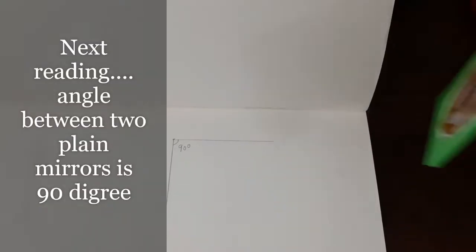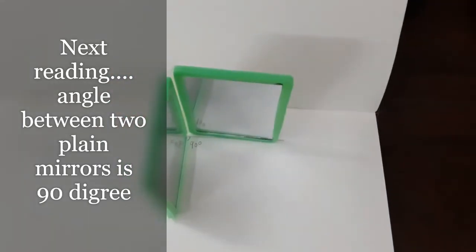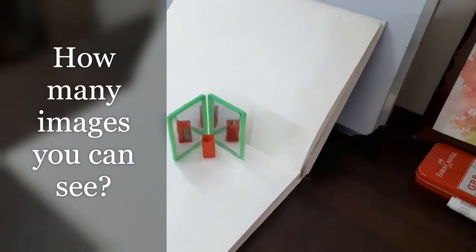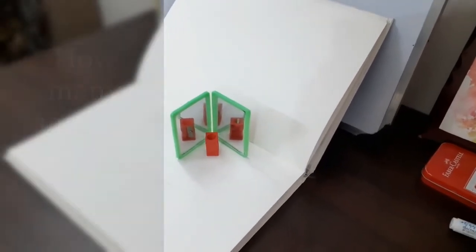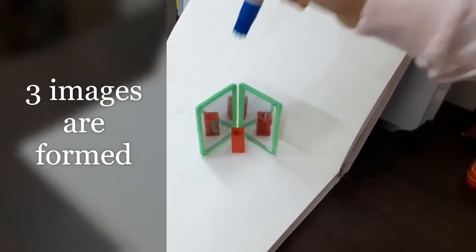Let us take the next reading. I will place the mirrors at 90 degrees. Let us place the object close to the mirror and observe how many images we can see. See three images here. One, two, and third in the center.